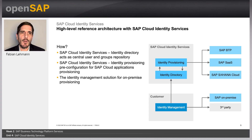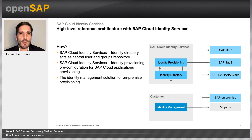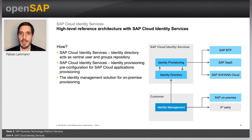Looking at the high-level reference architecture, SAP Cloud Identity Services can also be part of your landscape in a hybrid setup. For example, if you are using SAP Identity Management on-premise, you can connect it to Cloud Identity Services, and then replicate users into SaaS solutions like SAP Ariba, FieldGlass, or others, or directly into BTP.